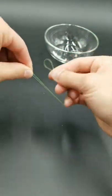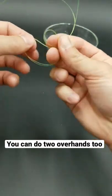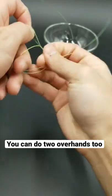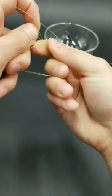This surgeon's loop knot. Fold your line over. Do three overhand knots. One, two, three.